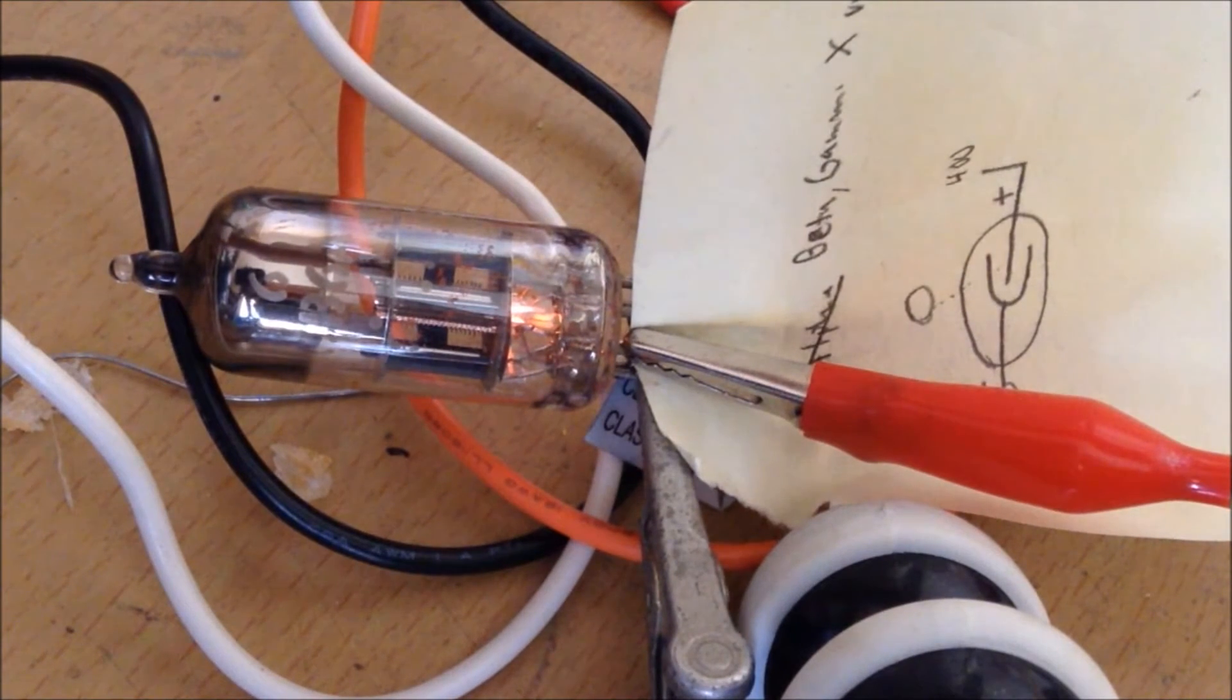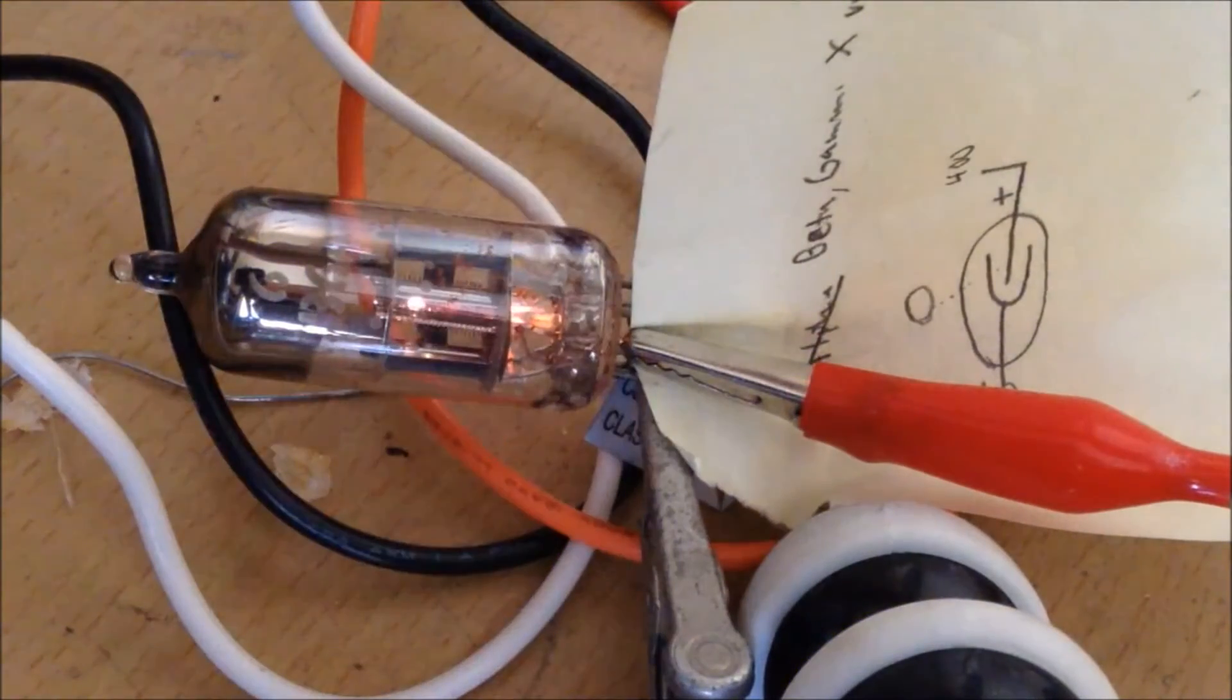But then, when I turn on the B plus voltage, which is 270 volts, the tube just fries.